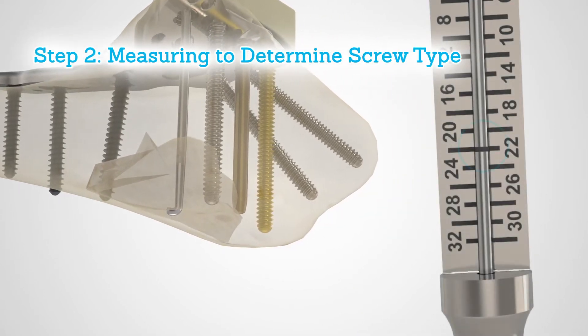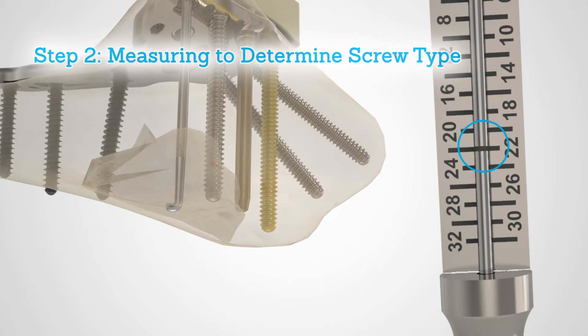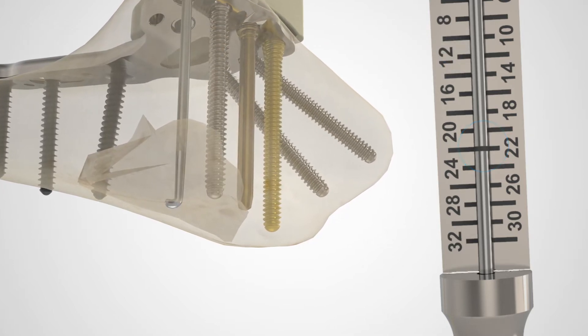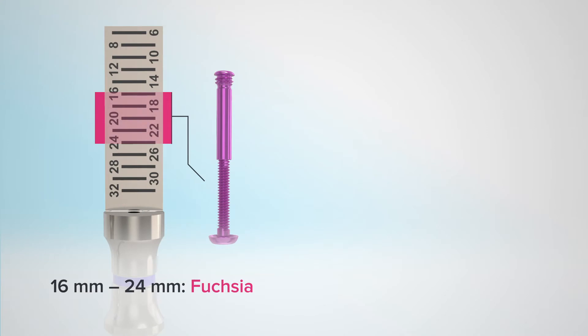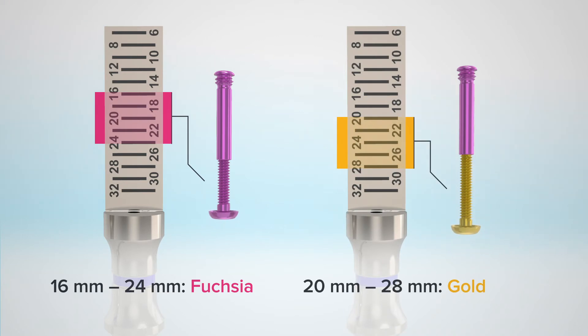If the measure is between 16 and 24 millimeters, it is acceptable to use the fuchsia-colored FragLock compression screw with the FragLock compression sleeve. If the measure is between 20 and 28 millimeters, it is acceptable to use the gold-colored long FragLock compression screw and compression sleeve.